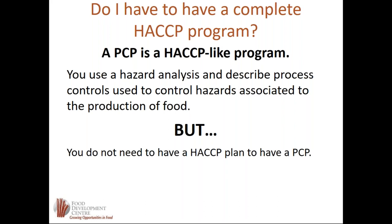A PCP is essentially like a HACCP program: it uses hazard analysis and describes the process controls used to control the hazards associated with your food production. But you don't need to have a complete HACCP plan. What the CFIA has done is reduce the requirements and said you just need to control the hazards that are associated with the production of your product.